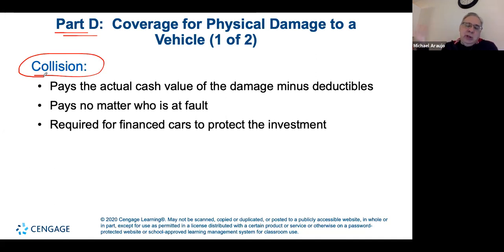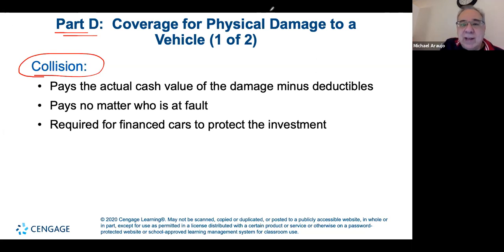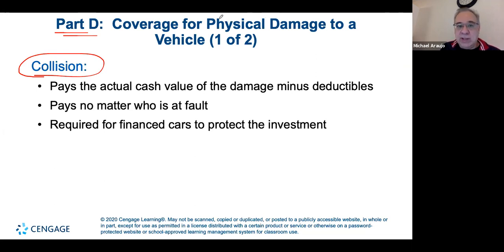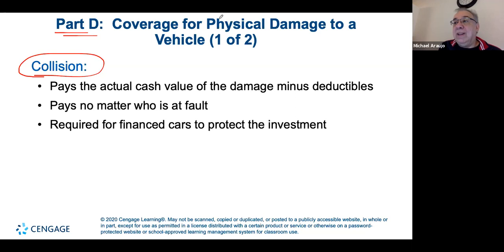The same applies to a right turn on red — people who already have the green light have the right of way. Collision coverage is not required by most states, but it's required by lenders if you have a loan on the car, because they want their investment protected. Leased cars also require collision coverage since the lessor technically owns the car.